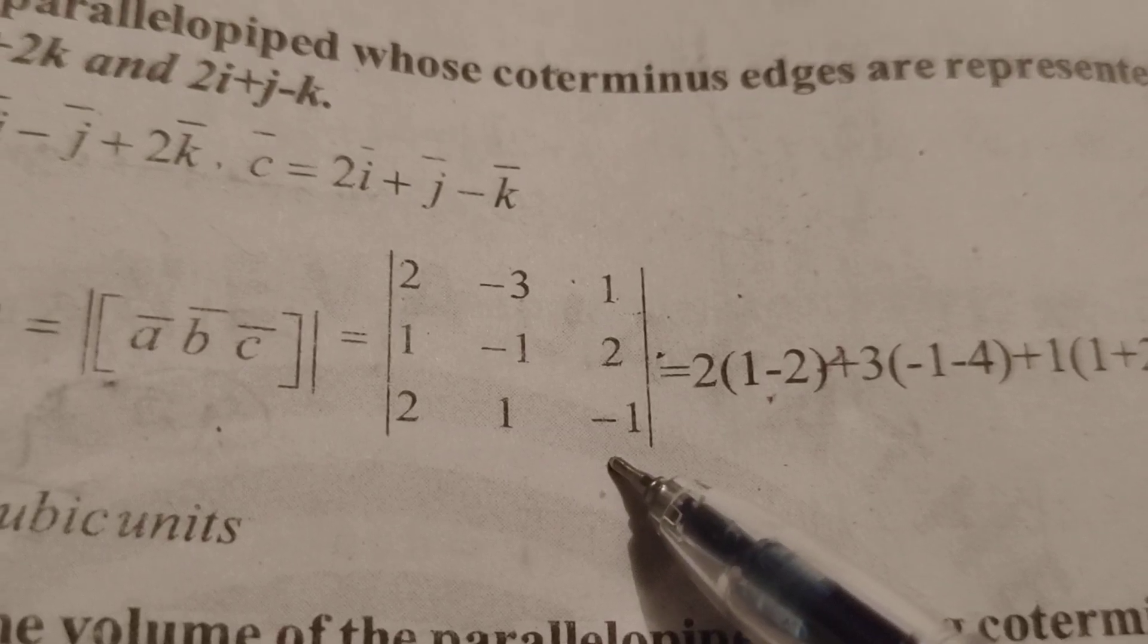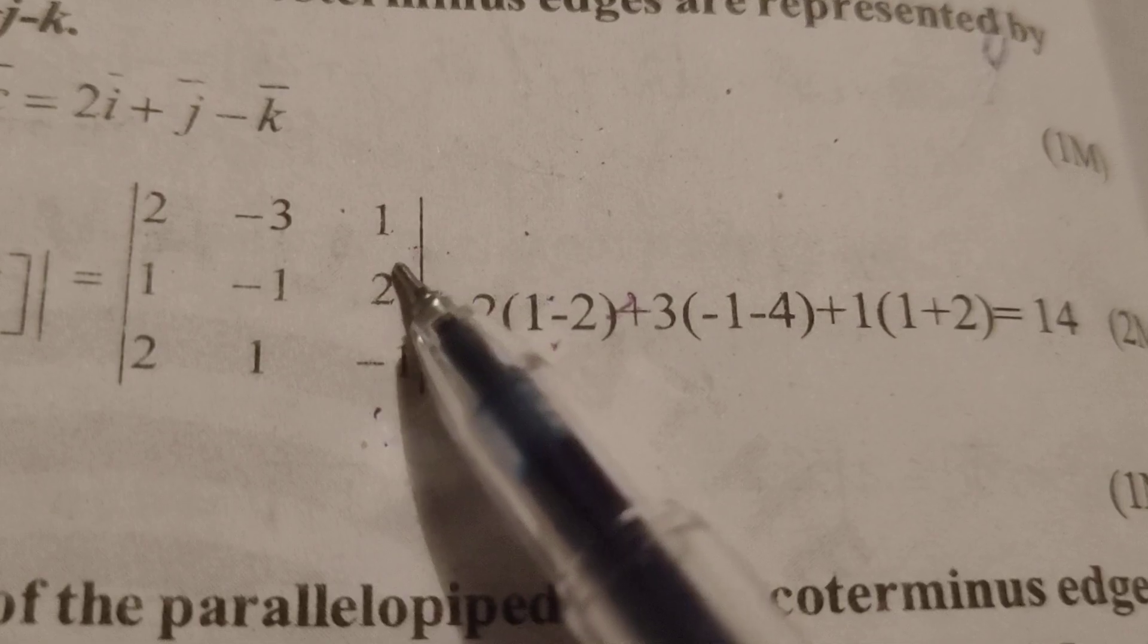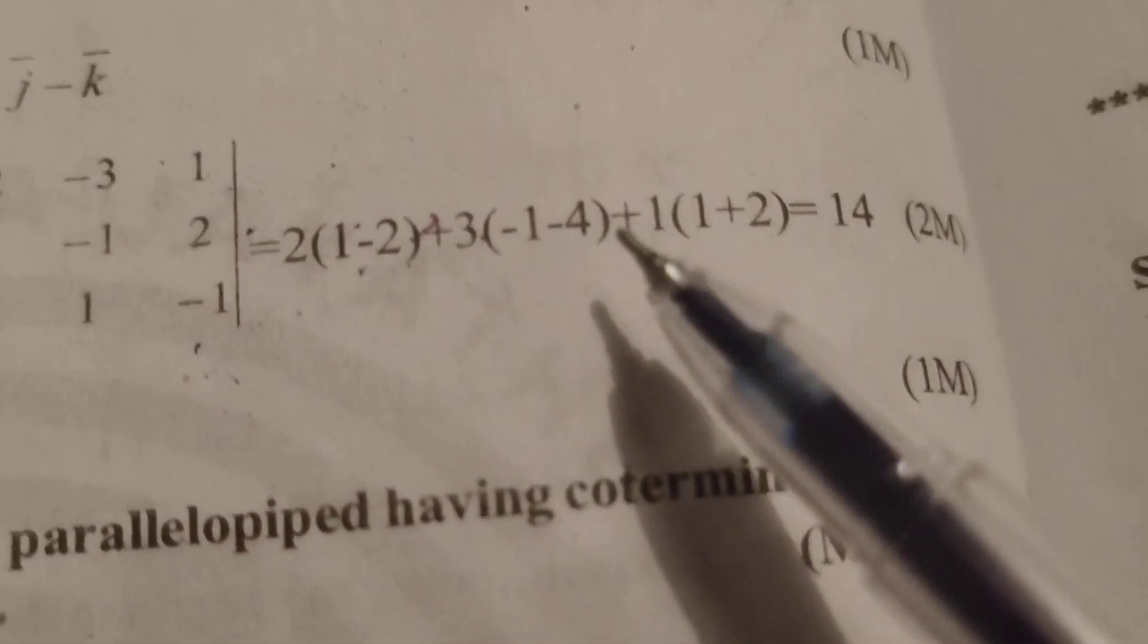Find out using the determinant formula: that is 2 into, accept this row and column using ad minus bc formula, that is 1 minus 2, 2 into 1 minus 2. Next, according to the formula, here minus 3, already minus is there, therefore plus 3 into, accept this row and column using ad minus bc: minus 1 minus 4.